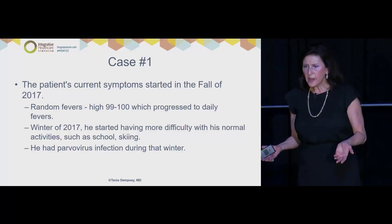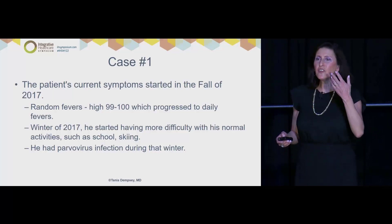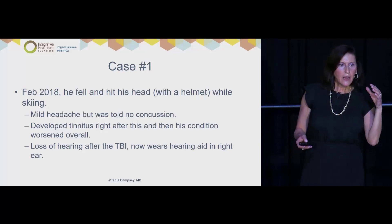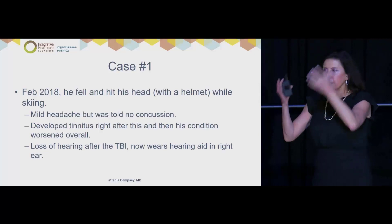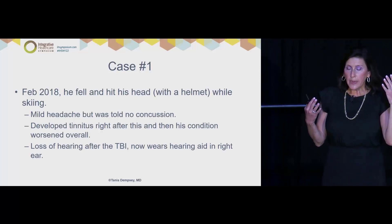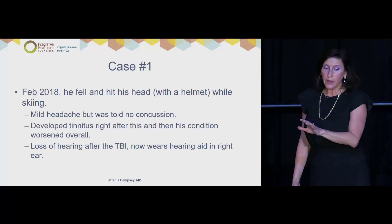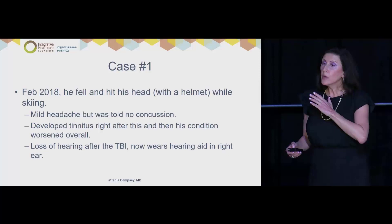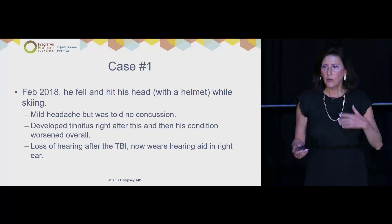You should be hearing the common theme: there's an event, then stabilization, then another event. A traumatic brain injury is major in a young, developing child. There are tons of mast cells in the brain. He was told he didn't have a concussion, but he probably did. He developed tinnitus that continued until I saw him — really the point at which his entire condition worsened. When I saw him, he actually had a hearing aid because he had lost hearing again in that ear. He continued with fevers, got the flu, and the pediatrician said, 'Maybe it is Lyme,' put him on doxycycline — maybe it helped, wasn't clear. He was very irritable and it was really hard to get good food into him.